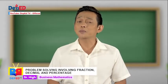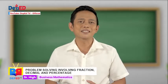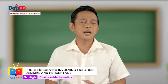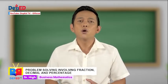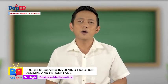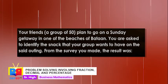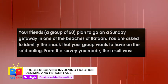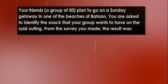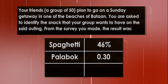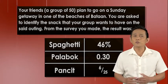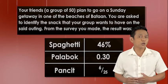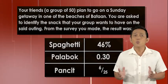I know you have now mastered the process of solving problems involving fractions, decimals, and percentage. Indeed, we are now ready to solve our hanging problem from the beginning of this episode. Let us recall it: your friends, a group of 50, plan to go on a Sunday getaway at one of the beaches of Bataan. You are asked to identify the snack your group wants. From the survey, the result was: spaghetti 46%, palabok 0.30, and pansit 6 over 25. How are you going to compute for the number of votes? Can you express the given data in fraction form? Why is it important to determine the snack that your friends want?